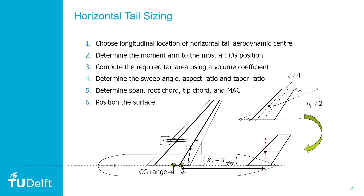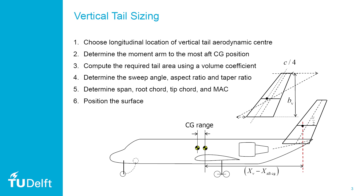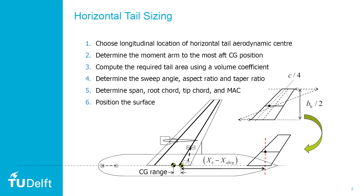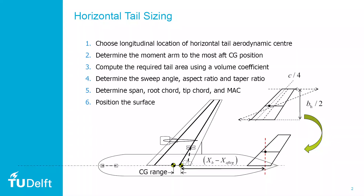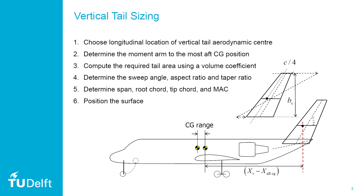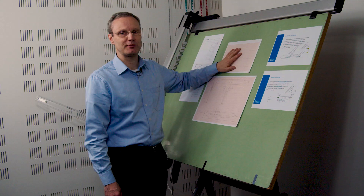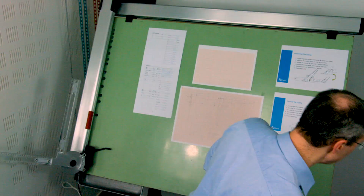In the step-by-step procedure we have the following steps: we choose the longitudinal location of the horizontal tail aerodynamic center, and do the same for the vertical tail — that's been given in our data sheet as the tail arm. In step two we have the moment arm with respect to the most aft CG. Steps one and two require the tail area volume, which has already been done on the data sheet. Sweep angle and aspect ratio are already done. We then determine span, root chord, tip chord, and mean aerodynamic chord — and then we'll position these. The positioning procedure involves making a separate drawing of the horizontal tail and the vertical tail — drawing them on a small piece of paper, cutting it out, and positioning it on the large drawing.